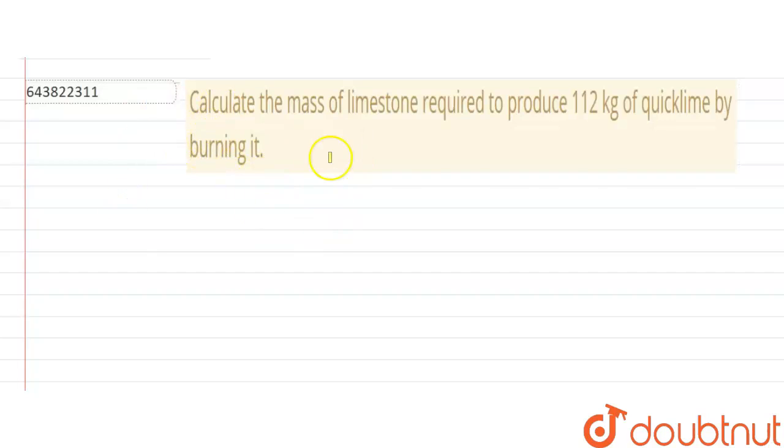Okay, so hello everyone. Now this question says that calculate the mass of limestone required to produce 112 kgs of quicklime by burning it. So let us begin with the solution.